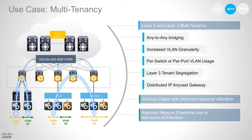This allows you to scale out better. Why do we need this? Going back to the technical business requirements, it really helps you reduce your capex and improve your utilization. And also, because of the leaf-spine architecture, it means that you have much better network uptime with it.